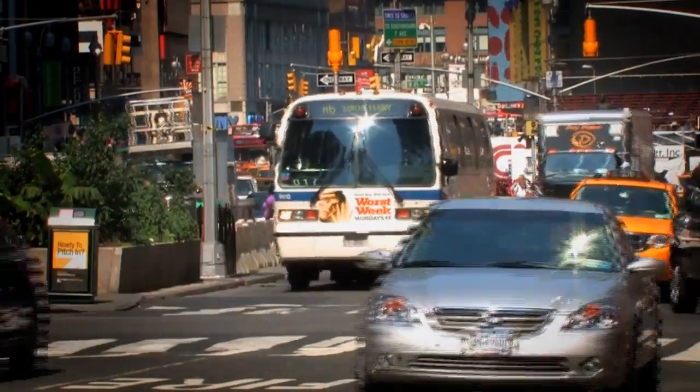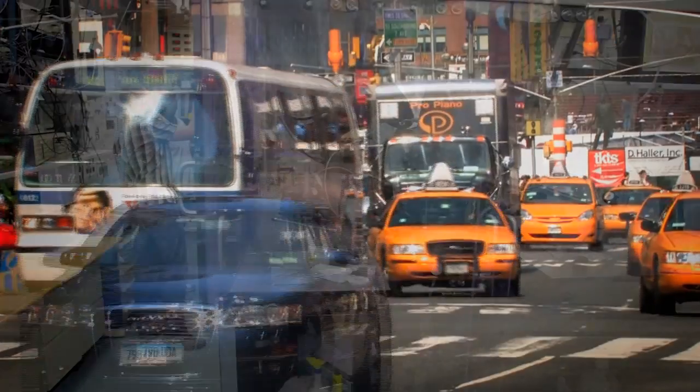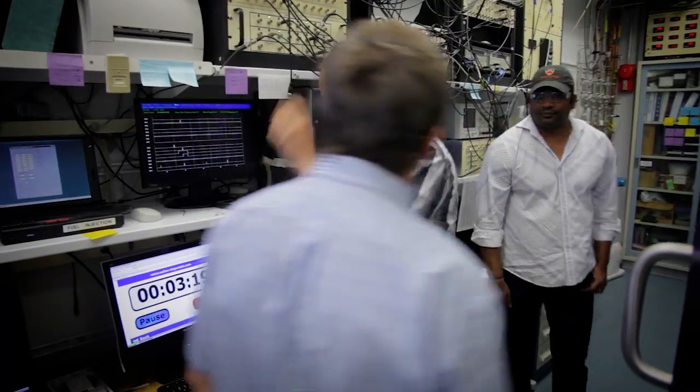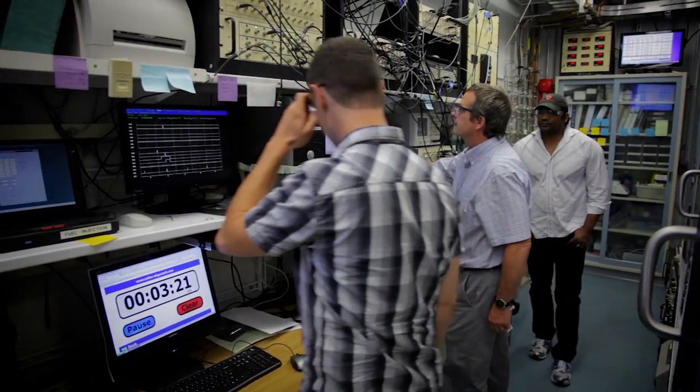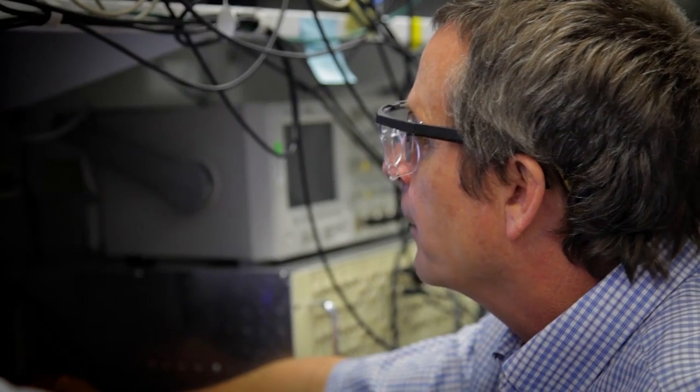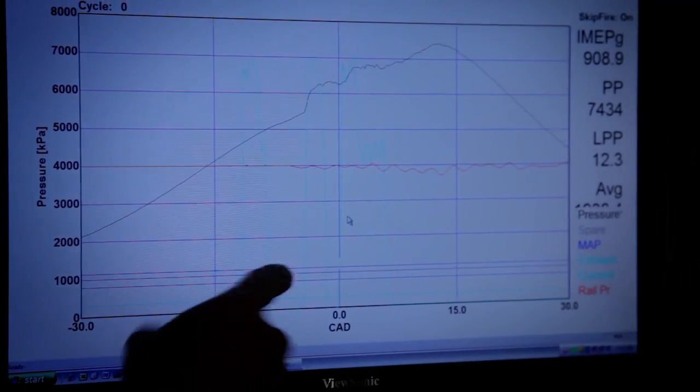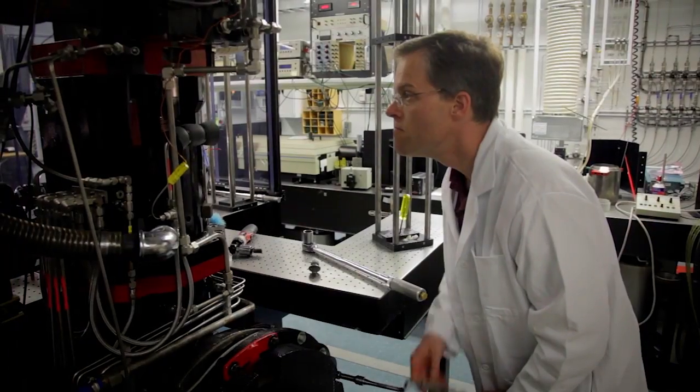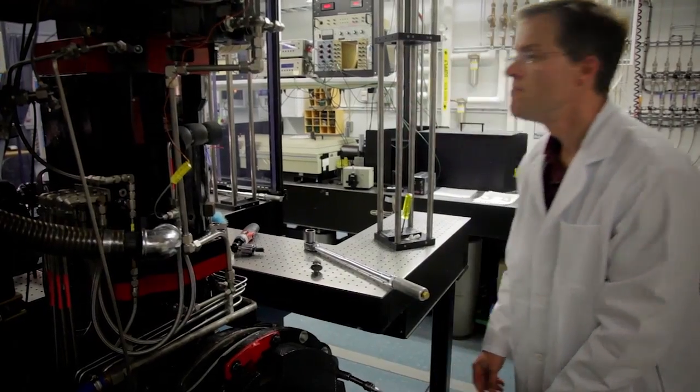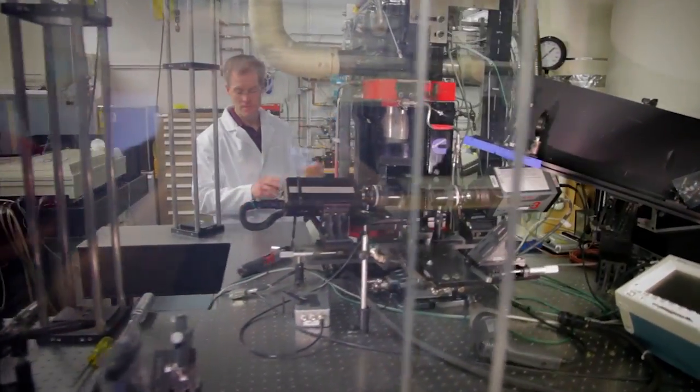So low temperature combustion is a way to reduce the temperatures so that we don't have those hot regions that make one of the pollutants, nitrogen oxides. And at the same time it provides extra time for the fuel to mix with the air so that we don't have regions with too much fuel that end up making smoke. And in that way low temperature combustion solves both of those problems.